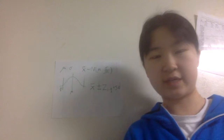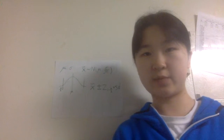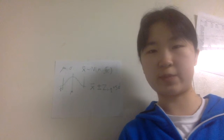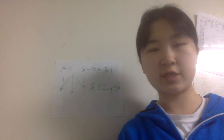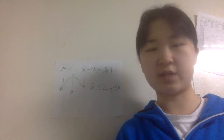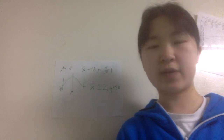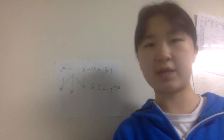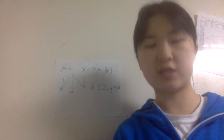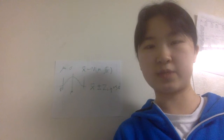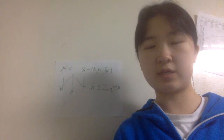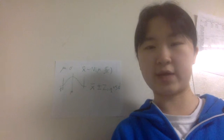A confidence interval is an interval estimate for the population parameter. It's based on the statistics from your sample data, and it's usually associated with a given confidence level. By confidence level, we mean the proportion of all possible confidence intervals that we can construct from all possible samples that actually contain the population parameter that you want to estimate.